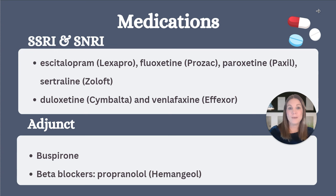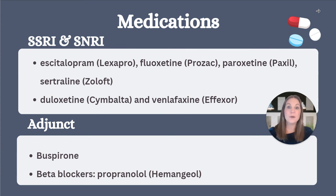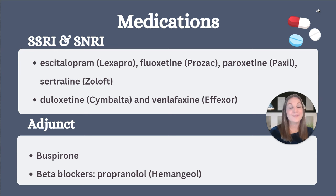A good thing to remember about our SNRIs, like duloxetine or Cymbalta and venlafaxine or Effexor, is that they can also be used for things like chronic pain management or migraine prophylaxis. If the SSRI or SNRI is working well for the patient, we would ideally like them to continue taking the medication for at least one year. We can always evaluate our treatment plan and change our course of action if needed.